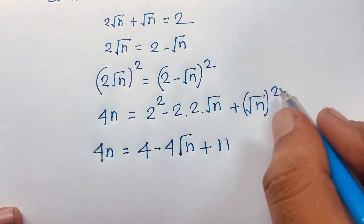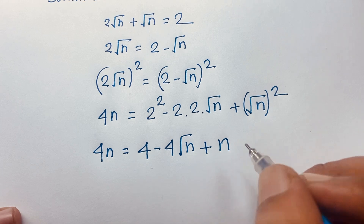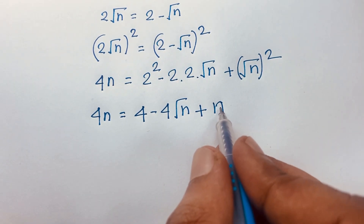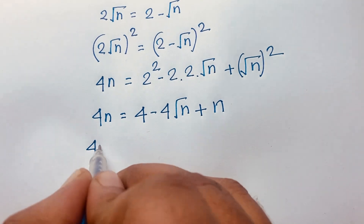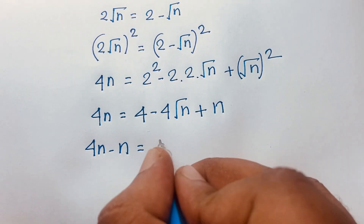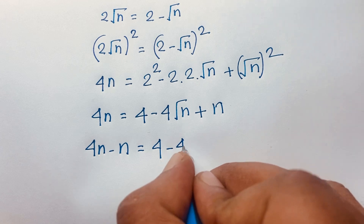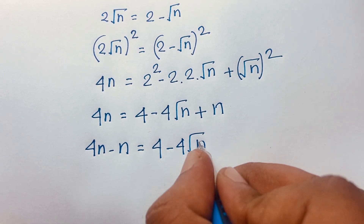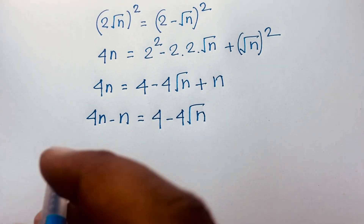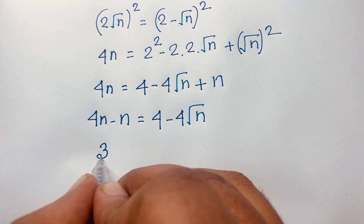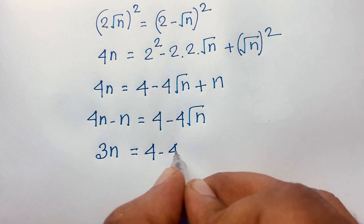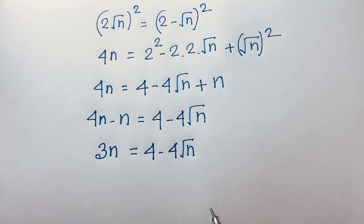So we have 4n = 4 - 4√n + n. Moving n to the left side: 4n - n = 4 - 4√n, which gives us 3n = 4 - 4√n.